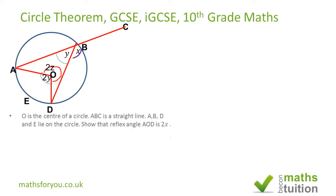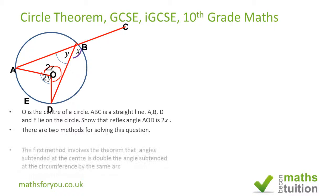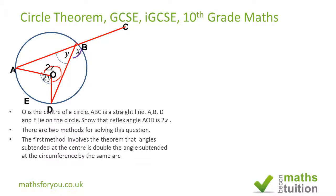We can solve this by two methods. We can solve it using what's given to us by the question itself, or we could create a cyclic quadrilateral if we join D to E and E to A. That's the second method, which I'll explain in the next slide.